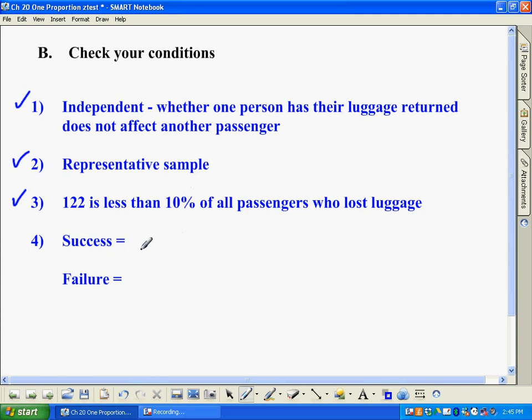Now for successes and failures, what we do is since in our null hypothesis we're assuming that 90% are returned, we're going to use 90%. We don't use what actually happened in our sample. So if you take 90% of 122, you're going to wind up with about 110 people would have their luggage returned within 24 hours. That's definitely greater than 10, and 10% of that would be about 12. So definitely here we meet conditions, and we can go ahead and proceed with what we call a one proportion z-test.